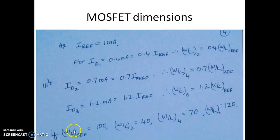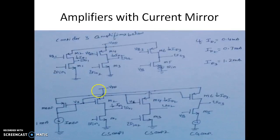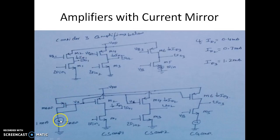If W/L of M_reference is 100, then M2 should be 40, M4 should be 70, and M5 should be 120 — giving 0.4, 0.7, and 1.2 mA respectively. This way we can get the required current flowing without worrying about what bias voltage is required. In the earlier case you had to exactly adjust the bias voltage so that the desired current flows. Now with a single reference current and the current mirror you can replicate that current to N number of amplifiers.